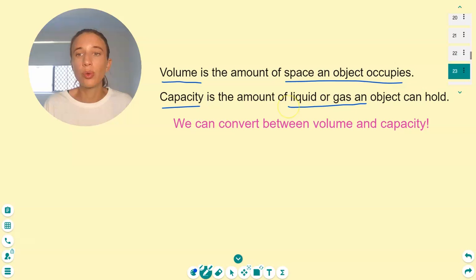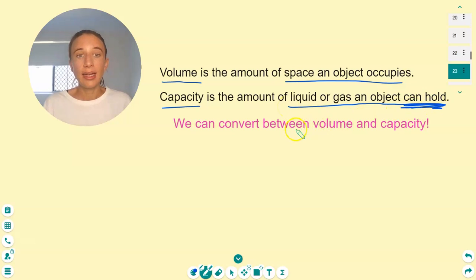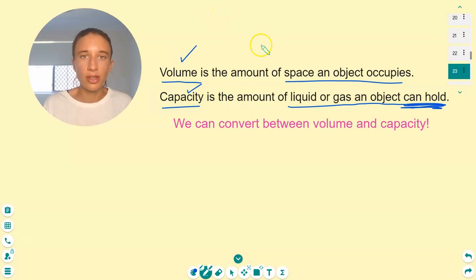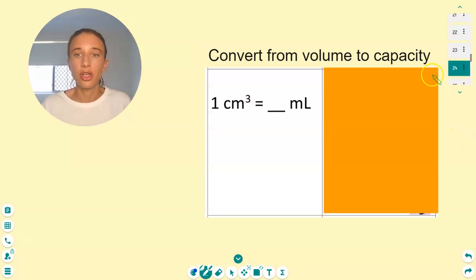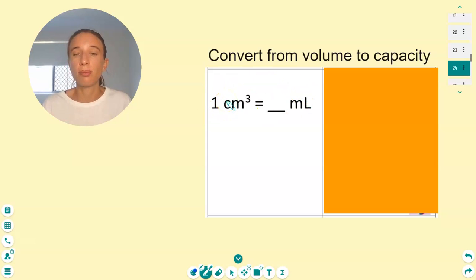Volume is the amount of space an object occupies; capacity is the amount of liquid or gas that an object can hold. We've looked at converting between units of volume and converting between units of capacity. Now we're going to look at converting between volume and capacity. There are two conversion facts to remember for this.